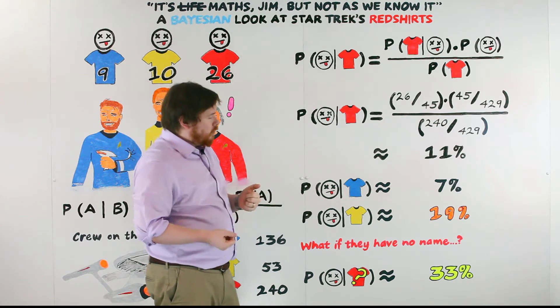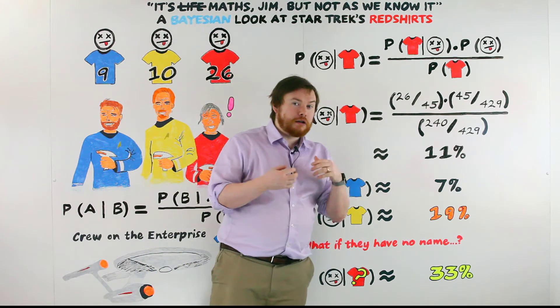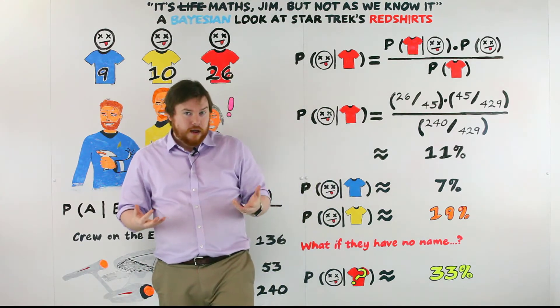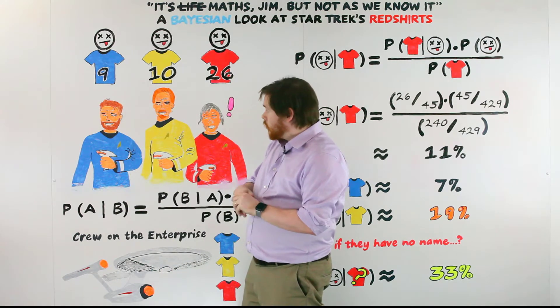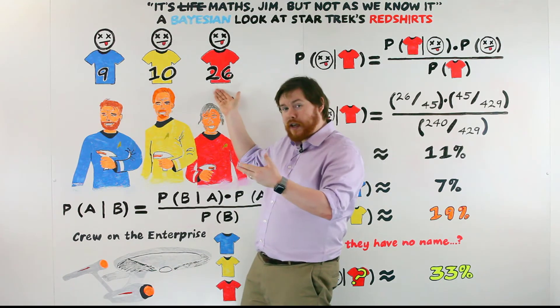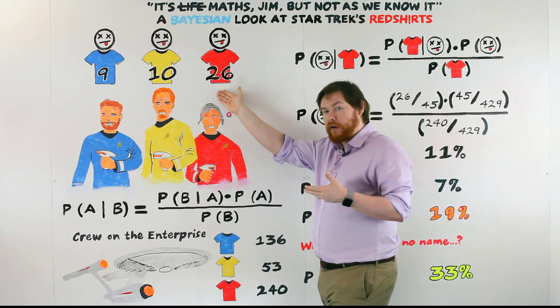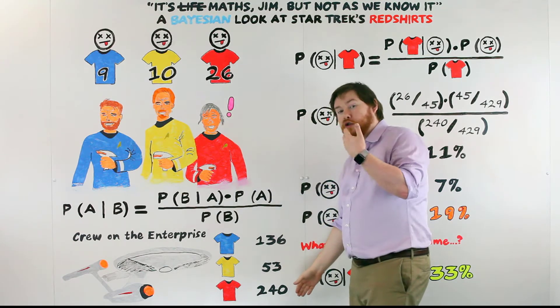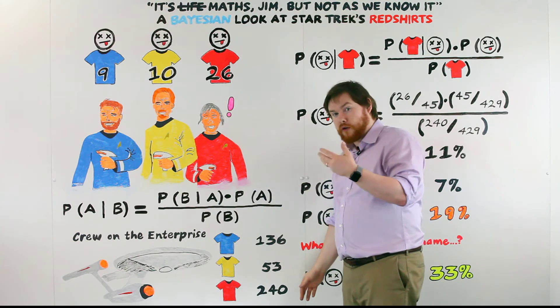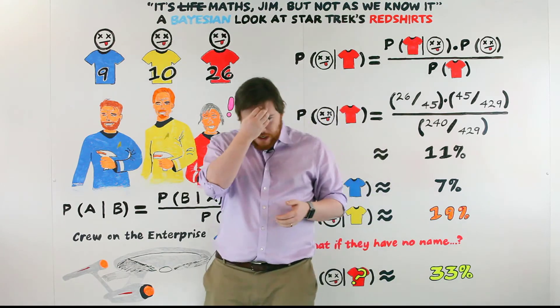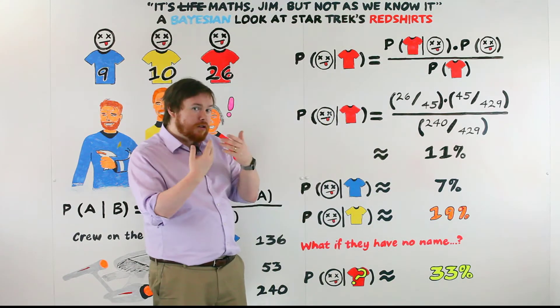So if you put those numbers in, we actually come out with a surprisingly low 11%. And the reason for that really is because yes, the majority of the characters who die are wearing a red shirt, but the majority of the crew are wearing a red shirt. So they're not necessarily more likely to actually meet their end on the show.